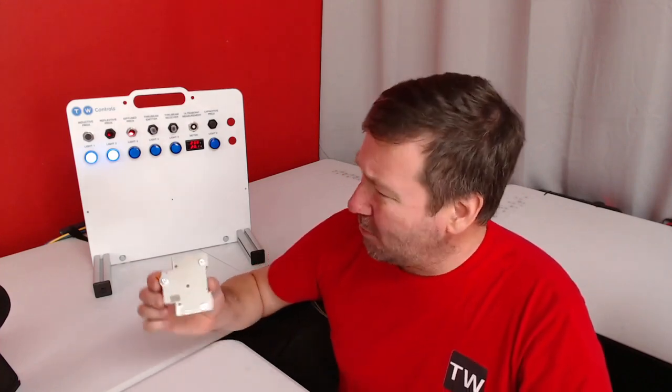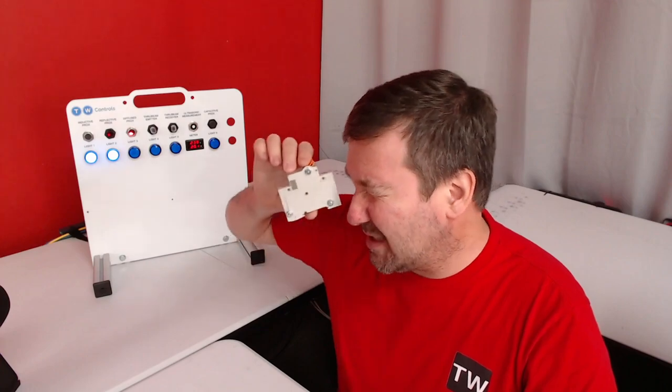Circuit breakers are an important part of all control systems, but how do they work? Like, what's inside of them?